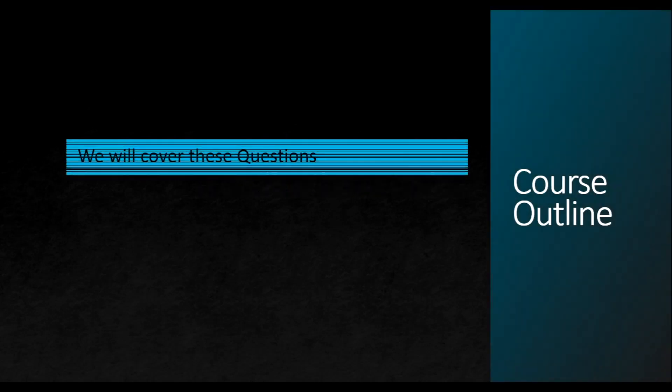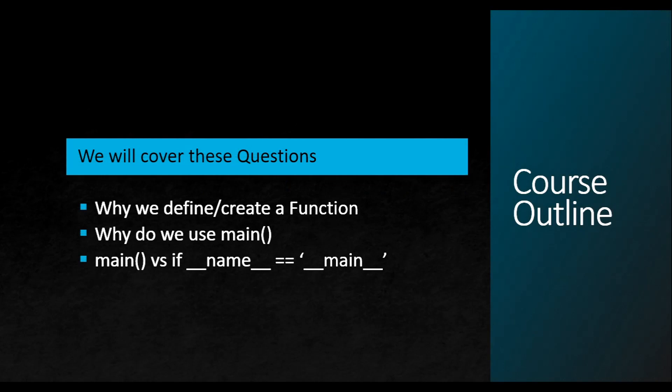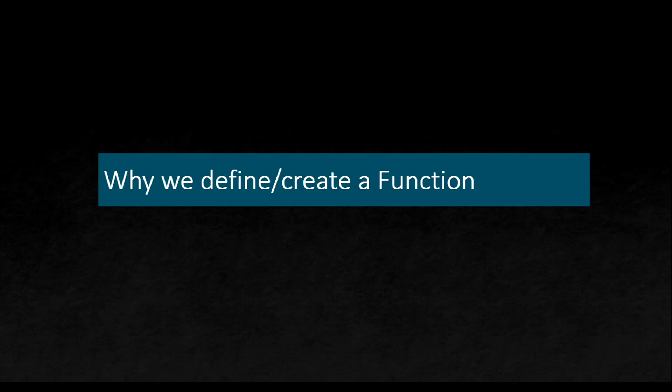Question number one is: why do we define or create a function? Question number two is: why do we use main? And the third question is: what's the difference between calling main at the end of the program versus writing if __name__ == '__main__' and then calling main? What's the difference? We will see. But first, let me salute you with the voice of the amazing David Malan. This is CS50.